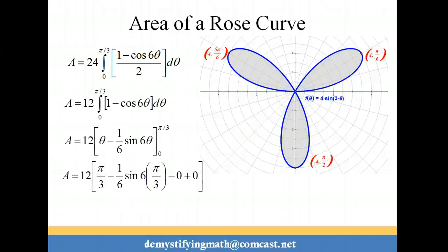So replacing theta with pi over 3, we have pi over 3 minus 1 6 times the sine of 6 times pi over 3. And replacing theta with 0, we get 0, and the sine of 0 is 0. Then we have the sine of 6 times pi over 3, which reduces to the sine of 2 pi, and the sine of 2 pi is 0. So all we're left with is 12 times pi over 3, which is 4 pi for our area.